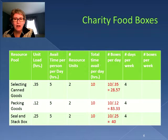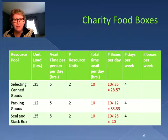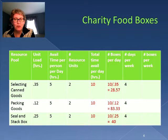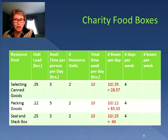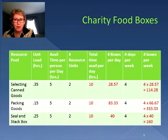When we calculate the effective capacity per day, we take the time available divided by the time needed — the unit load. Selecting canned goods yields 28.57 boxes per day, 83.33 for packing, and 40 for sealing and stacking. Since we're trying to meet 150 in a week and they work four days a week, we multiply our effective capacity per day by four.